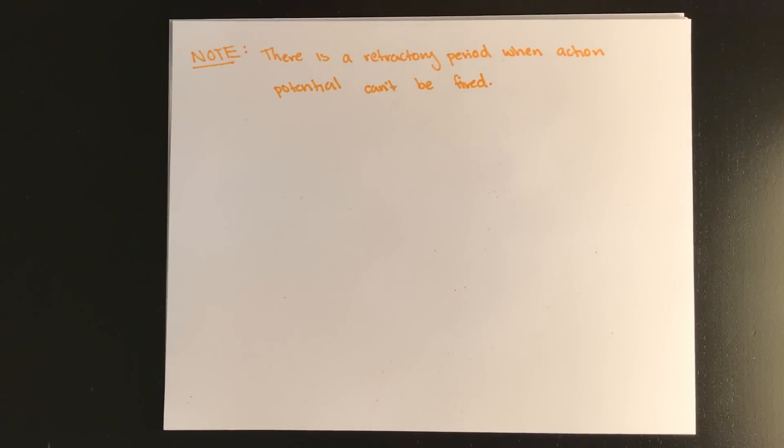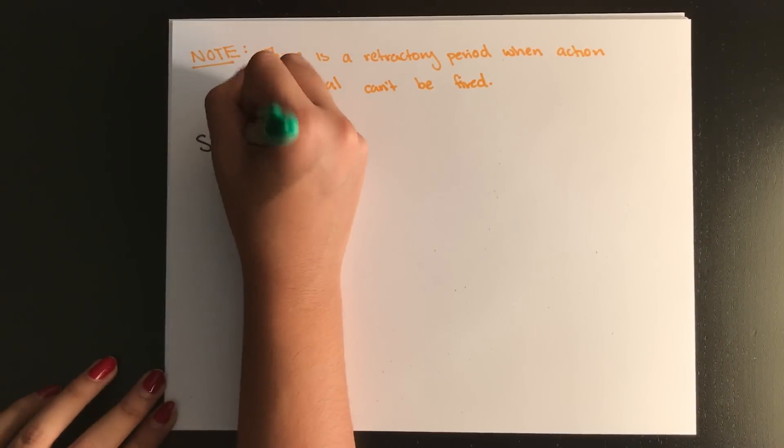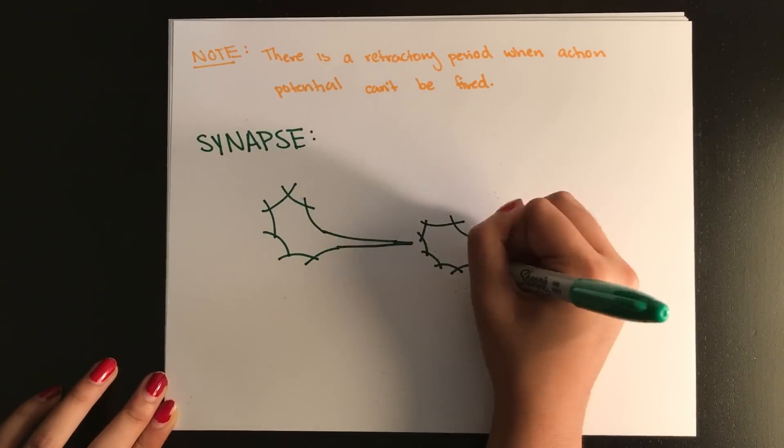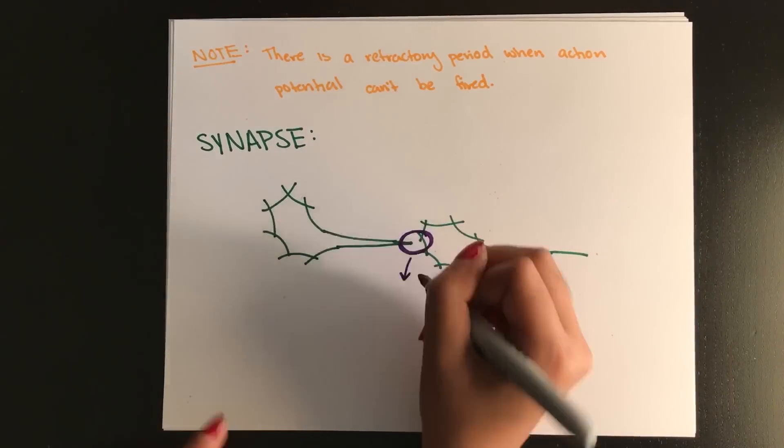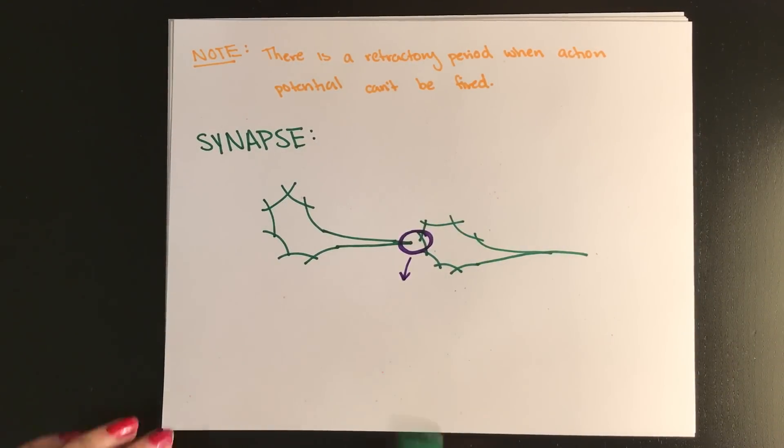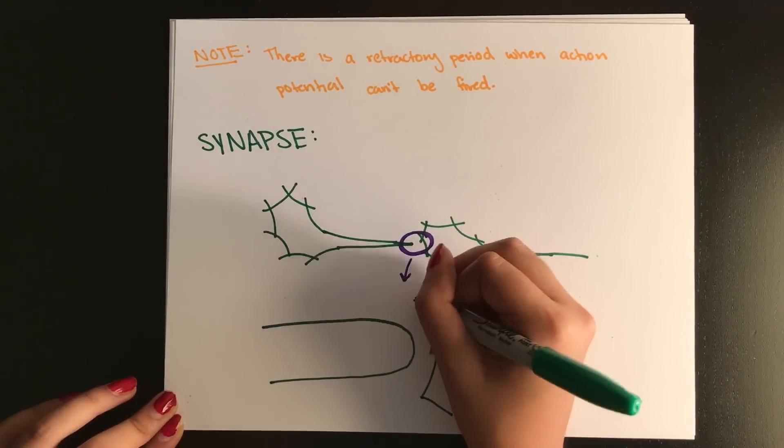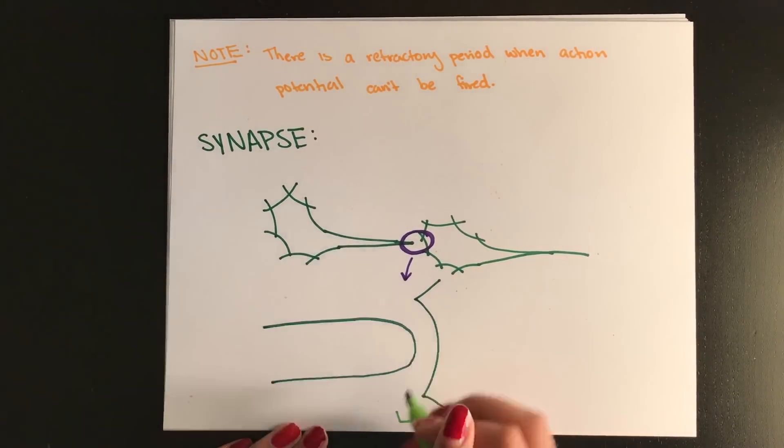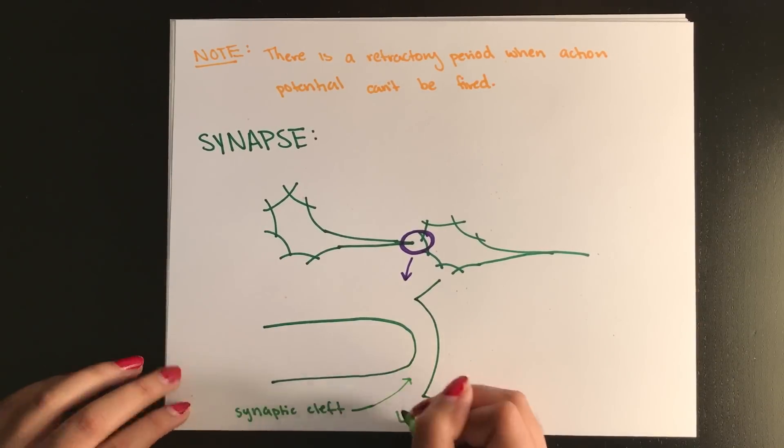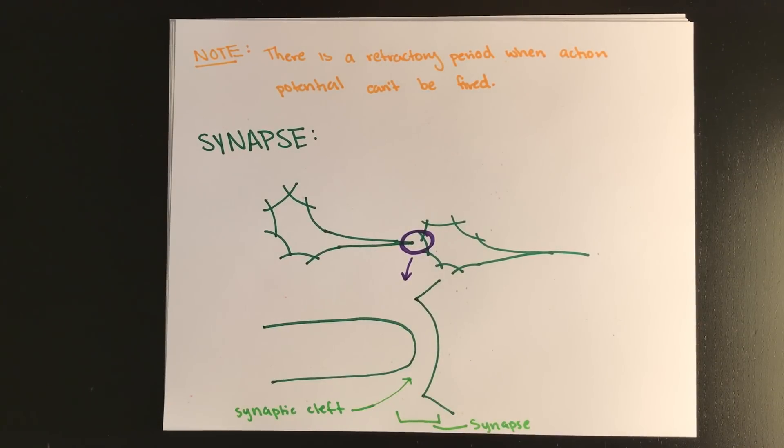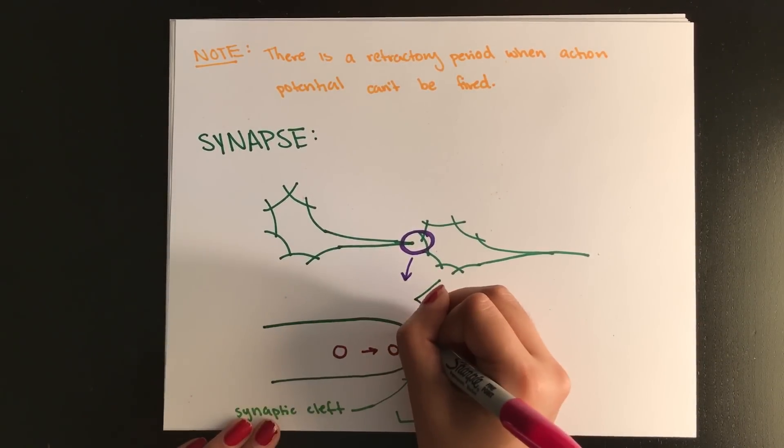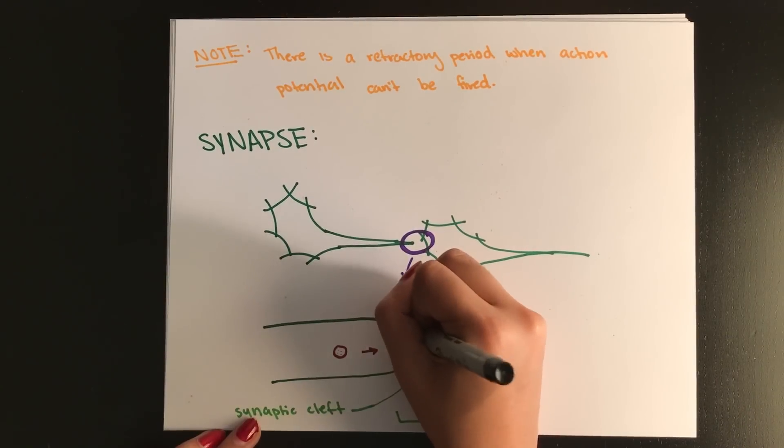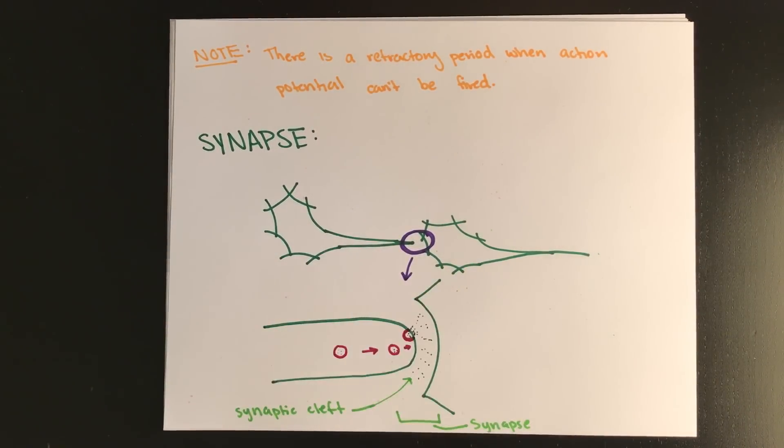Now the point where an impulse gets transferred to either another neuron or to an organ is called the synapse. So this is at the end of one neuron connecting to either another neuron or another organ. So most synapses use neurotransmitters to pass the impulse on. And the most common neurotransmitter is acetylcholine. Remember that one for the test. It's really important. Remember that the structure of a synapse is basically a gap between two neurons. And the gap is called the synaptic cleft. And on the end of an axon, this is where the neurotransmitters are contained. And then the dendrites from the other, let's say it's a neuron on an organ, from the other neuron can bind to those transmitters.